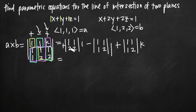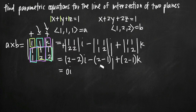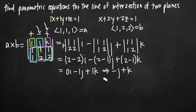Simplifying each 2x2 determinant: for i, (1×2 − 2×1) = 2 − 2 = 0, so 0i. For j, (1×2 − 1×1) = 2 − 1 = 1, and with the negative sign we get −1j. For k, (1×2 − 1×1) = 2 − 1 = 1, so +1k. The result simplifies to negative j plus k, or in vector form: (0, −1, 1). This cross product of the two normal vectors is the direction vector of our line of intersection.